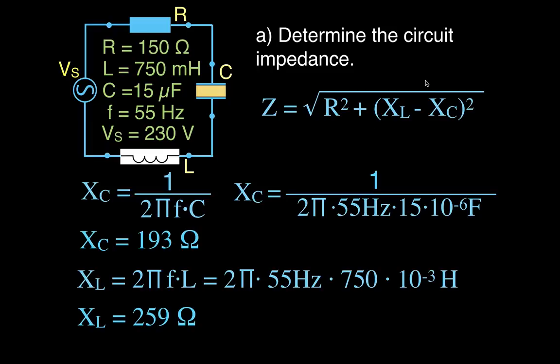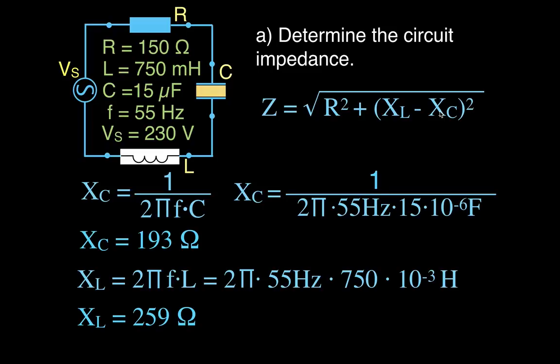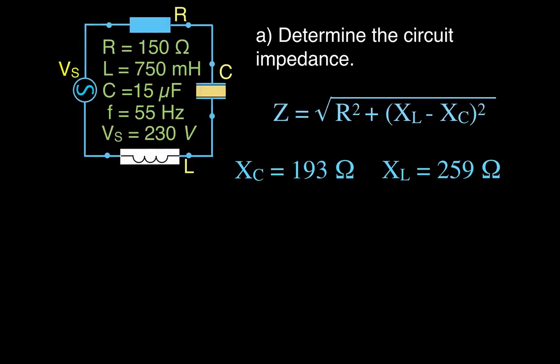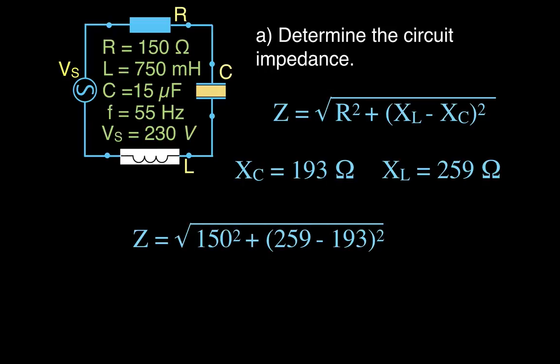Now we have all three values: resistance is 150 ohms, inductive reactance is 259 ohms, and capacitive reactance is 193 ohms. The impedance is the vectorial sum of all reactances and resistances in the circuit, so Z equals the square root of 150 squared plus (259 minus 193) squared, giving an impedance of 164 ohms.